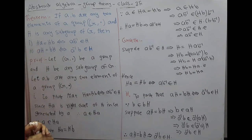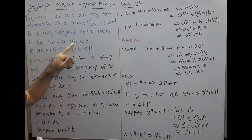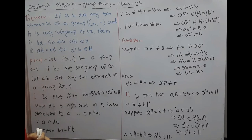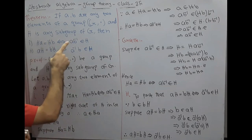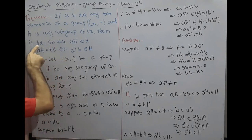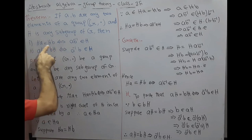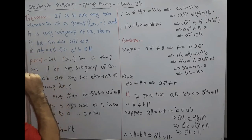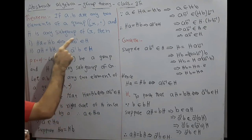Case one: Ha = Hb if and only if a·b⁻¹ belongs to H. Here Ha is the right coset generated by a in G, and Hb is the right coset generated by b in G.